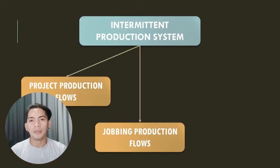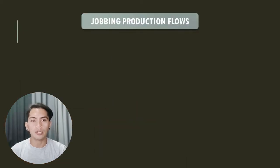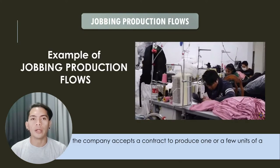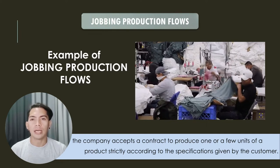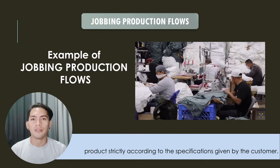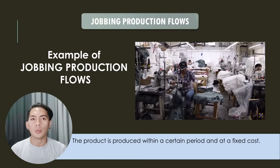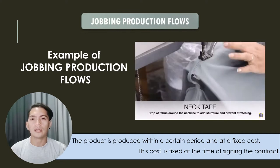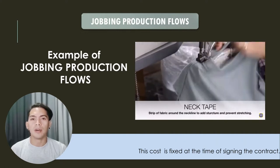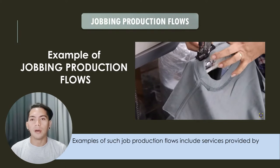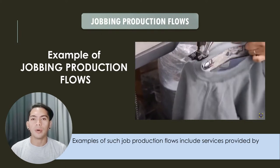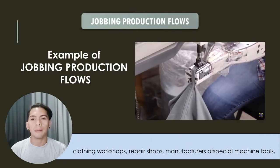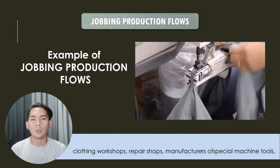The second type of intermittent production system is jobbing. For jobbing, a company accepts a contract to produce one or a few units of a product strictly according to the specifications given by the customer. The product is produced within a certain period and at a fixed cost, which is fixed at the time of signing the contract. Examples of job production flows include services provided by clothing workshops, repair shops, manufacturers of special machine tools, and so on.